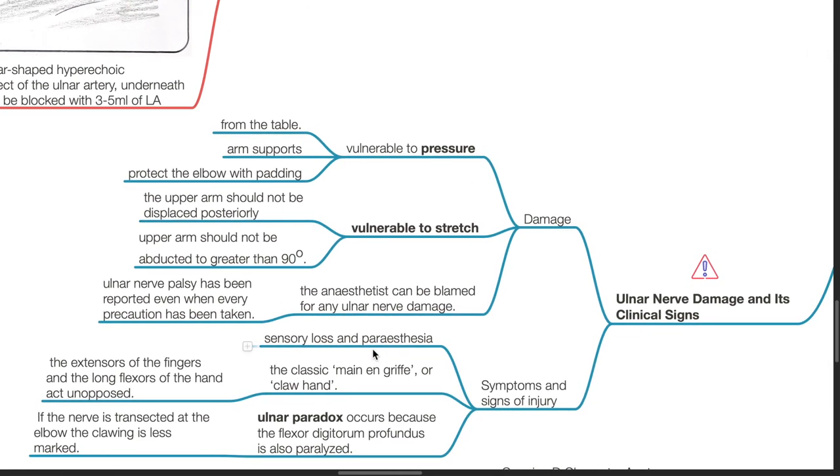Ulnar nerve damage and its clinical signs. It is vulnerable to pressure from the operation table and arm supports. Protection of the elbow with padding is routine practice. The ulnar nerve is also vulnerable to stretch. The upper arm should not be displaced posteriorly and should not be abducted to greater than 90 degrees. The anesthetist can be blamed for any ulnar nerve damage. Ulnar nerve palsy has been reported even when every precaution has been taken.